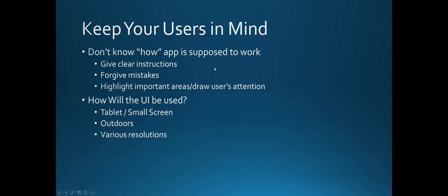Your end users don't know how the app is supposed to work, so give them clear instructions. Forgive their mistakes — if a text box only expects characters, don't even allow them to enter numbers. Highlight important areas that need attention. Think about where your application will be used: web, mobile, tablet, or outdoors? Outdoors may affect colors, font sizes, and resolution. If it's a government contract on specific machines, you know the resolution; if it's a public application, you may need a more dynamic user interface.